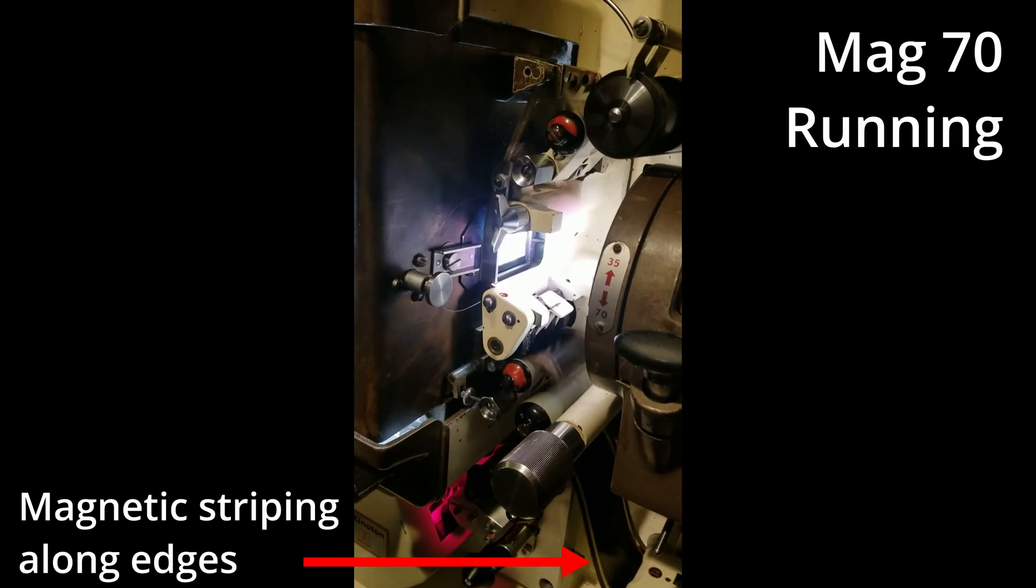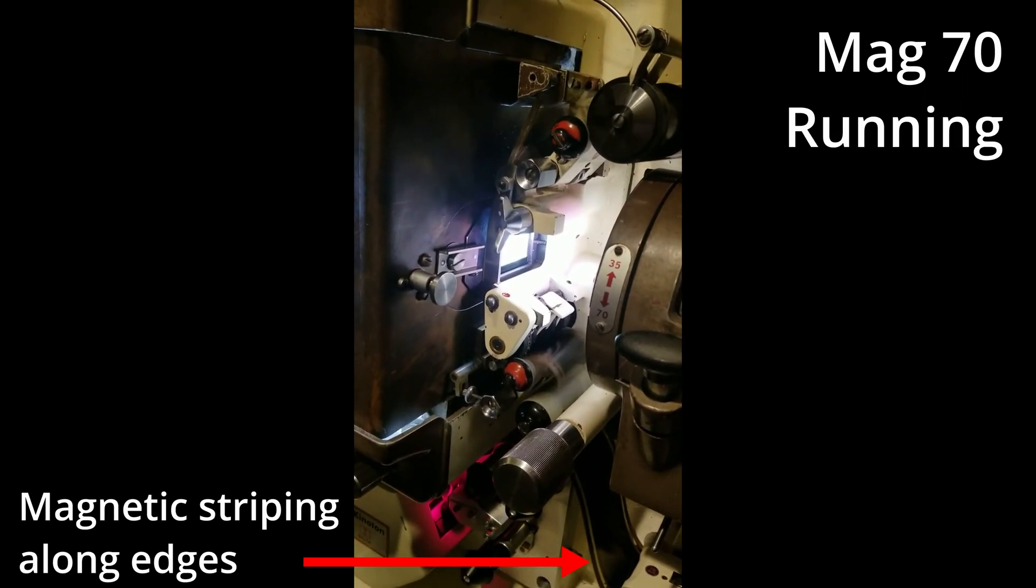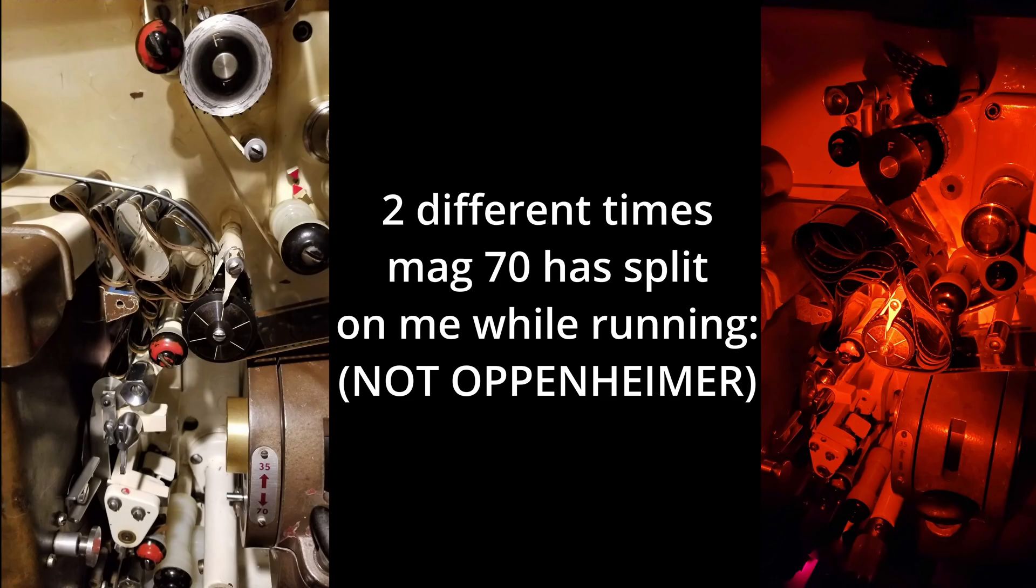Historically, 70mm film used magnetic audio, which could provide six tracks of analog audio with quite high fidelity. It did, however, not have the best durability, and made an already expensive format even more expensive.